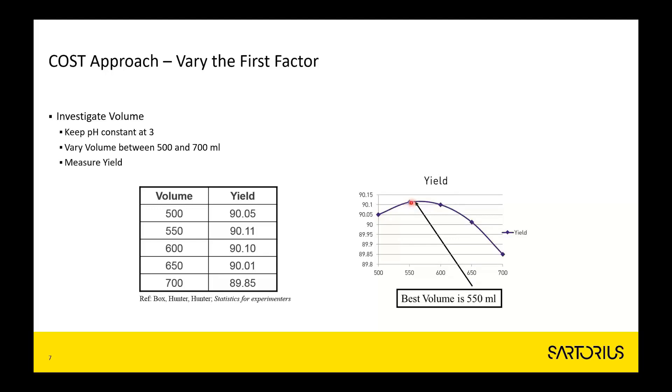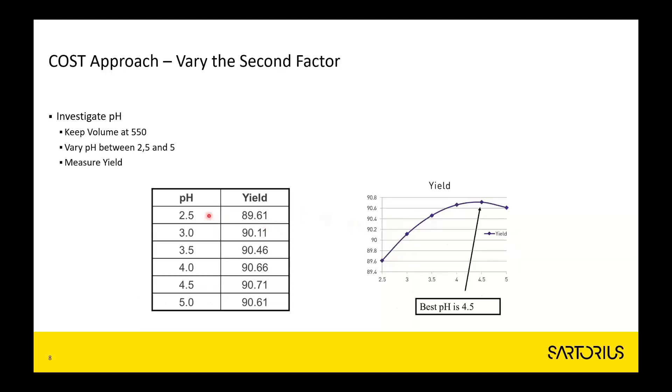Then you decide to carry out a second set of experiments, and here you are locking volume at 550 and you start to change pH instead. These investigators, while using the volume fixed at 550, did six experiments where pH was investigated in incremental steps of 0.5 all the way up from 2.5 to 5.0. By scatter graphing it like this, you see that the best pH is 4.5.